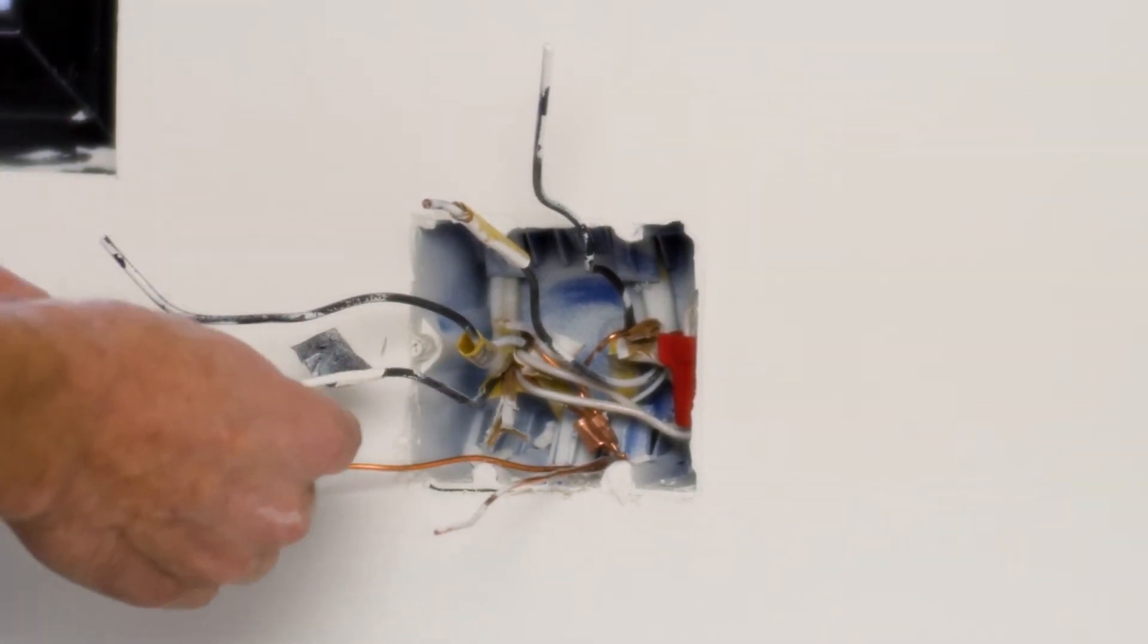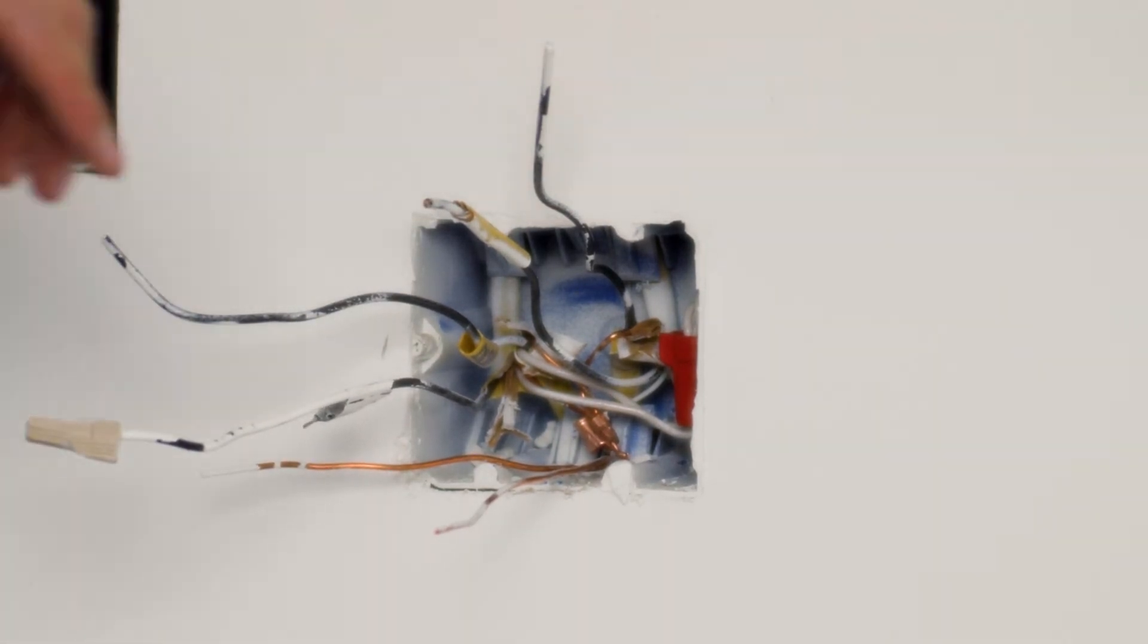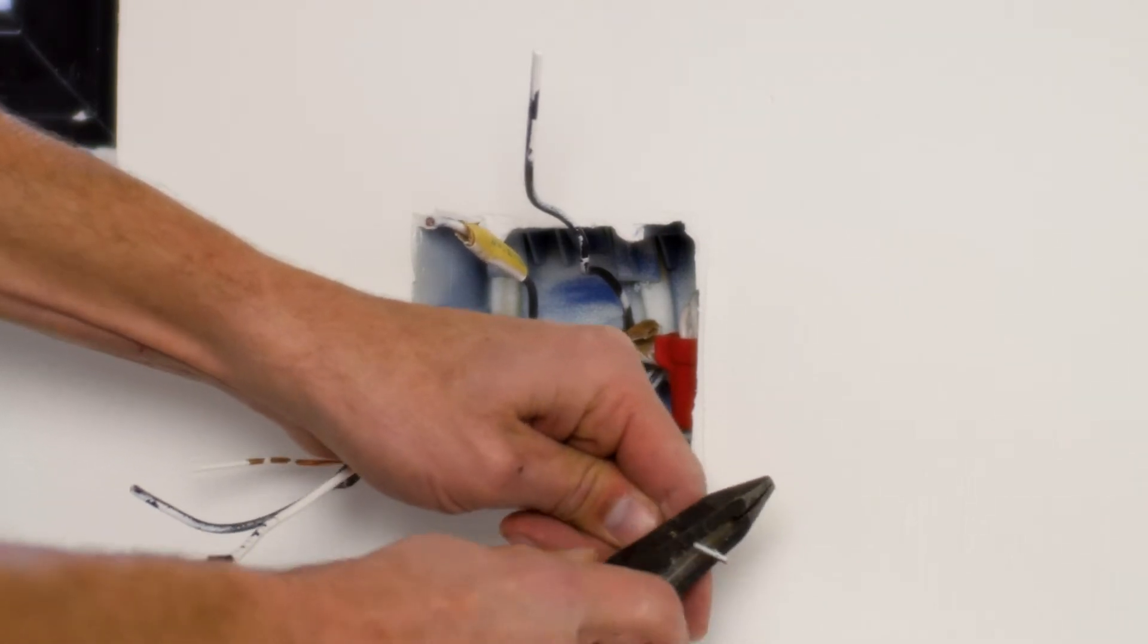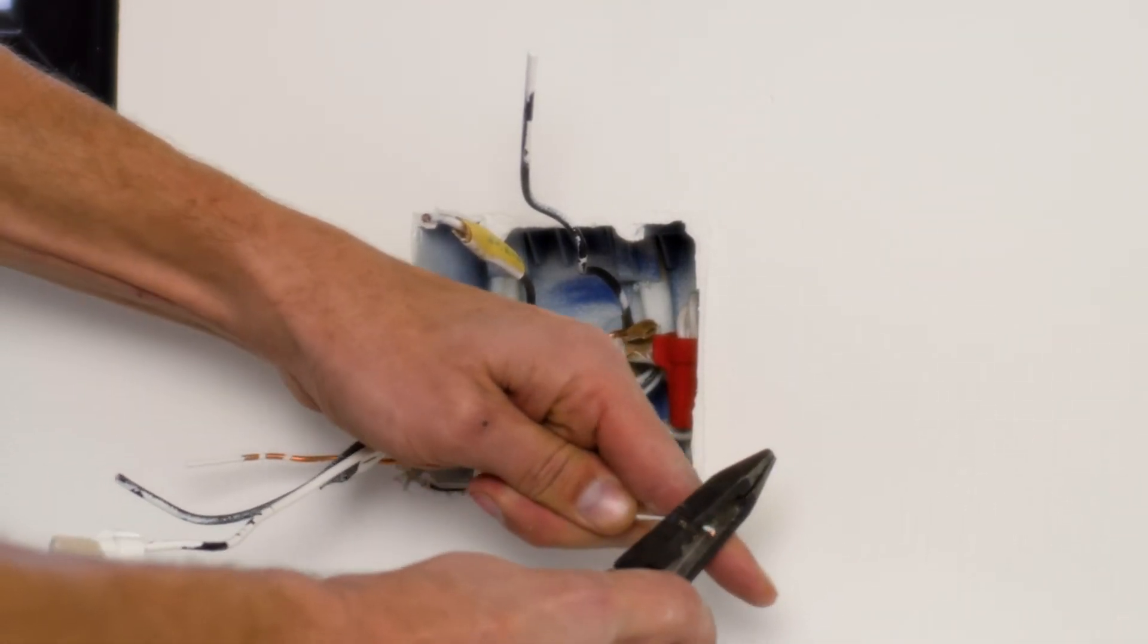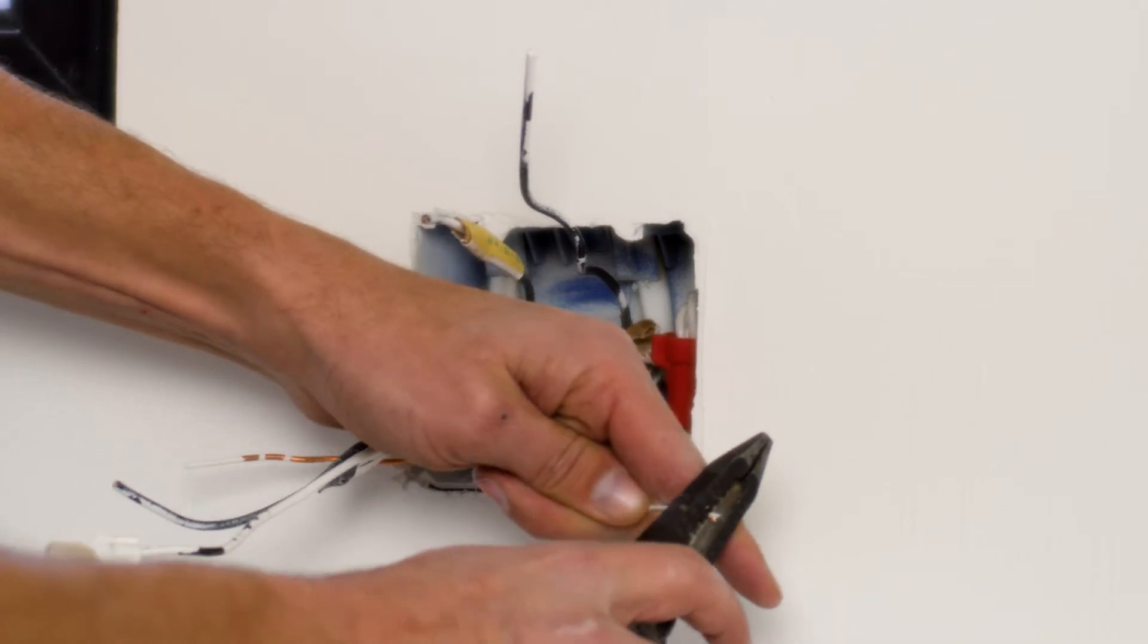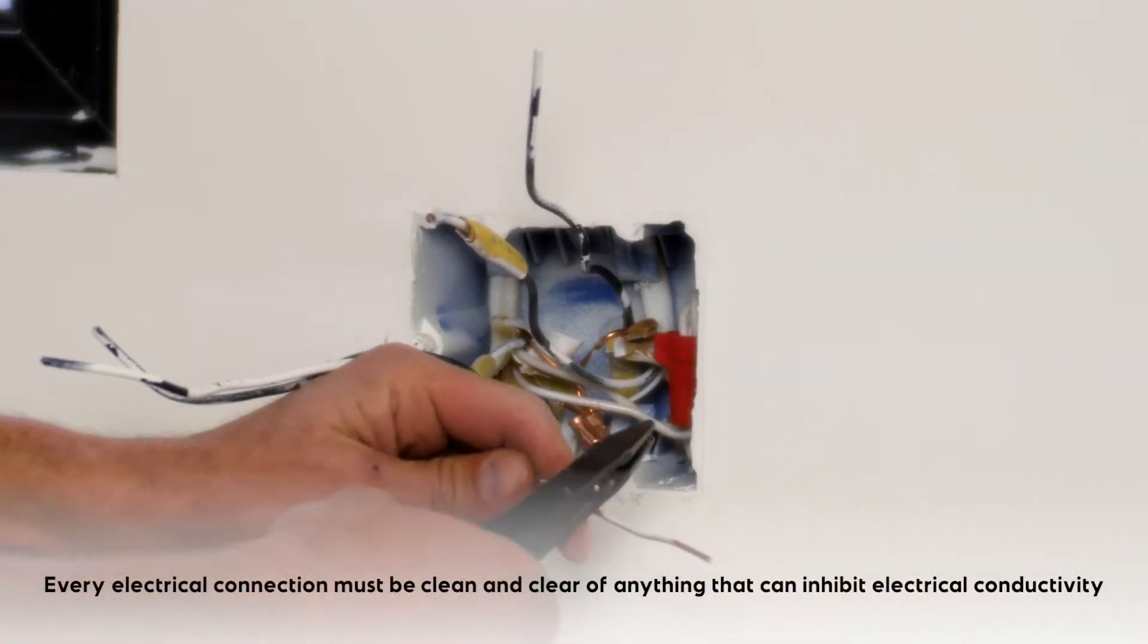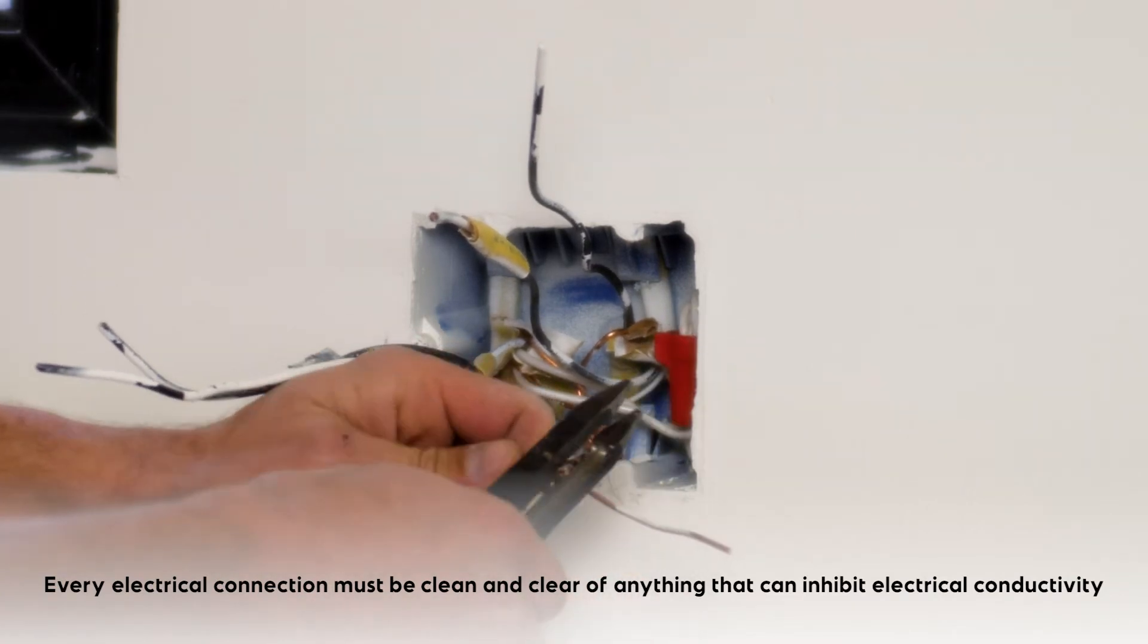All right, now I need to deal with all of the rest of my conductors. And what I'm going to choose to do is to clean up my grounds. Again, I'm using the 12-gauge strip hole and I'm running it along the end of that ground to remove the primer. I'm doing the same with both.